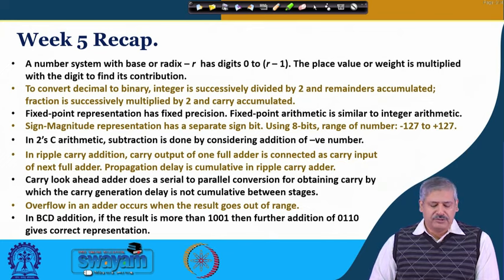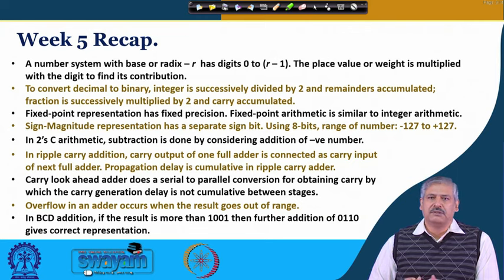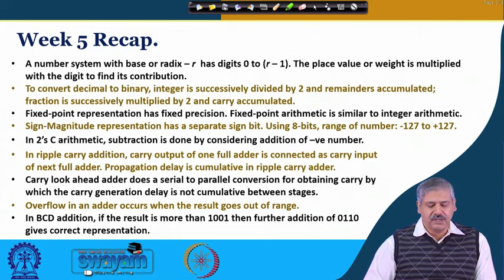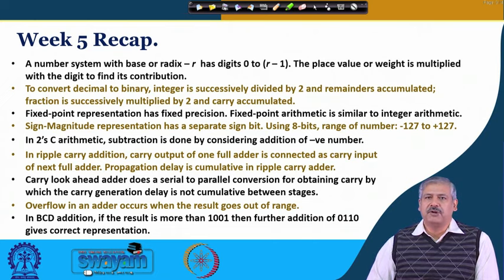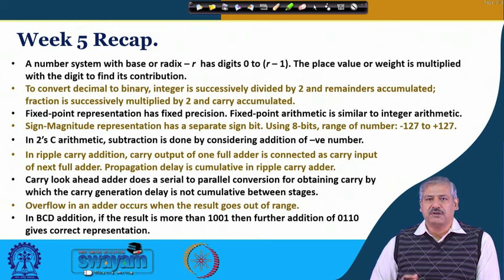To convert decimal to binary, the integer part was successively divided by 2 and remainders were accumulated. For the fractional part, it was successively multiplied by 2 and the carry was accumulated. We had seen that fixed point arithmetic has fixed precision and it follows integer arithmetic. For negative number representation, sign magnitude was discussed and also 2's complement and 1's complement.